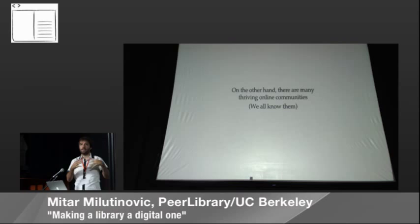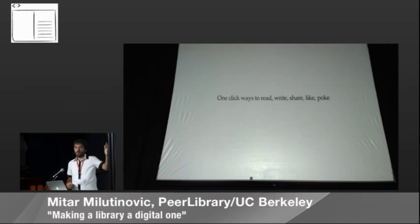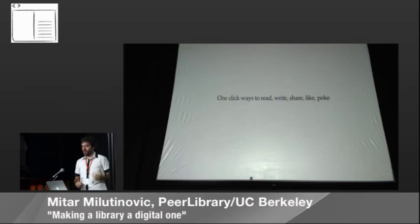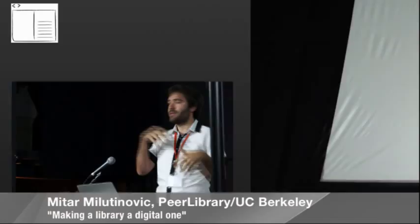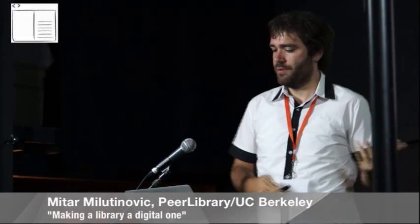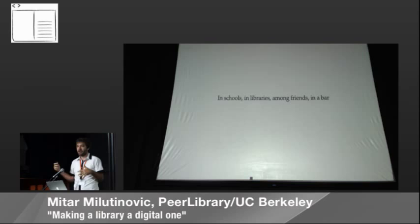Why do we still just have digitized versions of things without really having communities and all the things we have on the web? Why can we not, with one click, share, like, poke — whatever we do with online things — why can't we do this with books? Where is the gap? This lack of diversity is bad — bad for users, bad for publishers, bad for everybody. Because it's not just about the book as an entity; it's about social interactions around the book. That's what made books so popular. We can discuss them, share them, bring them around. And this happens everywhere in the physical world — in schools, in libraries, among friends, in a bar. Books can be anywhere — except on the web.